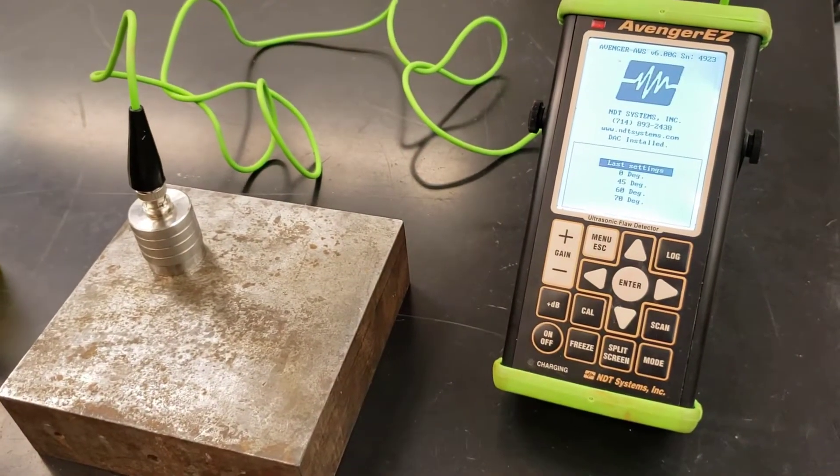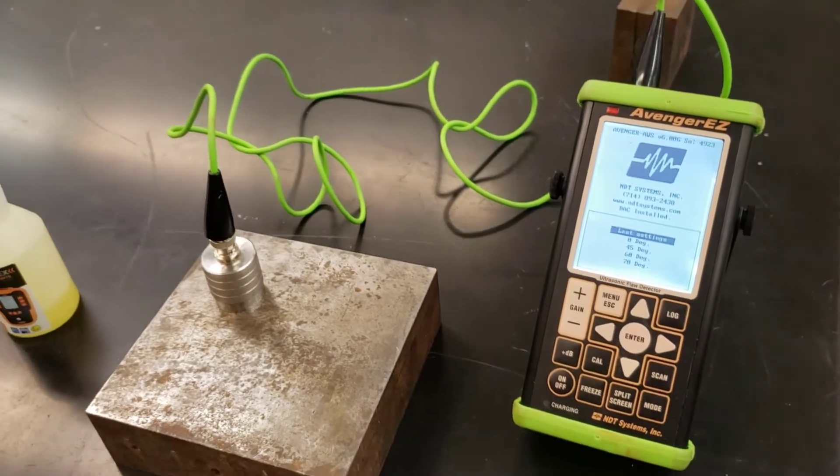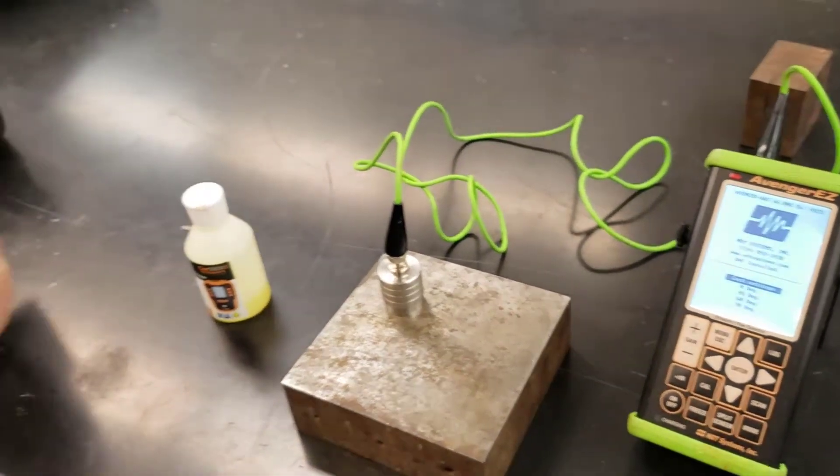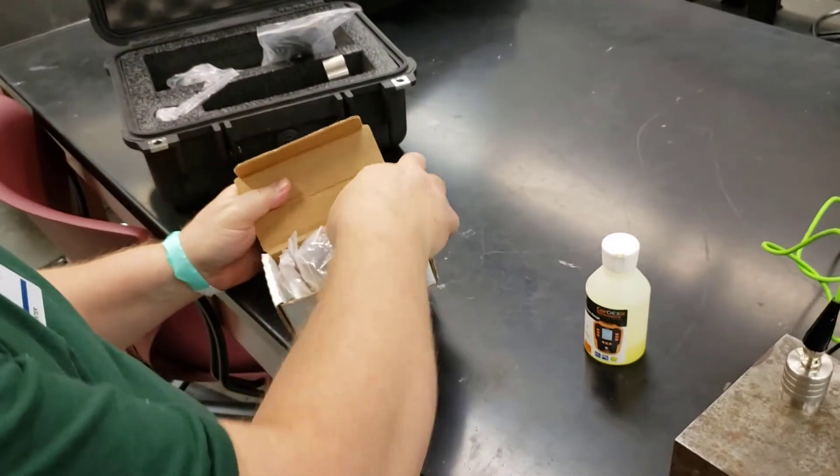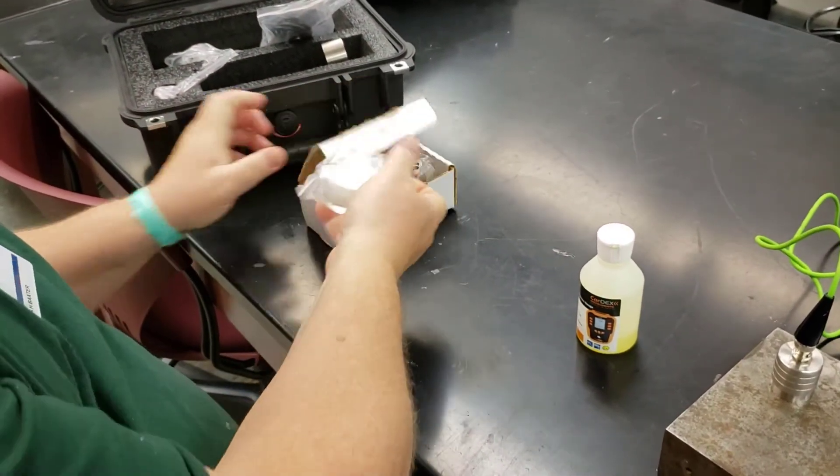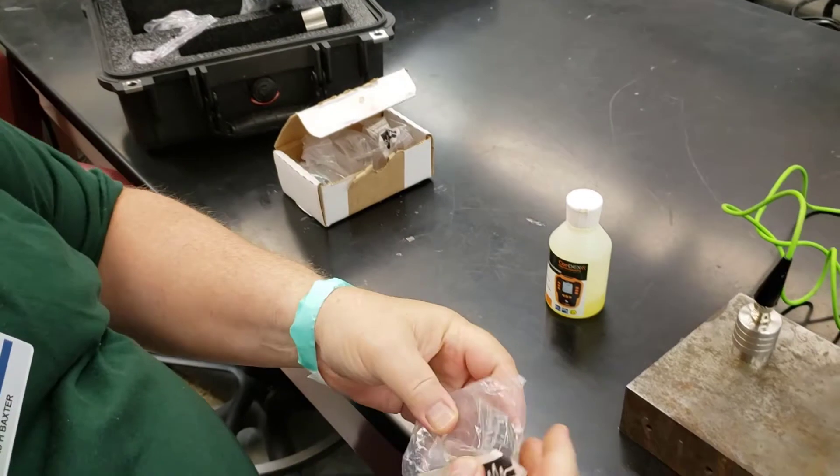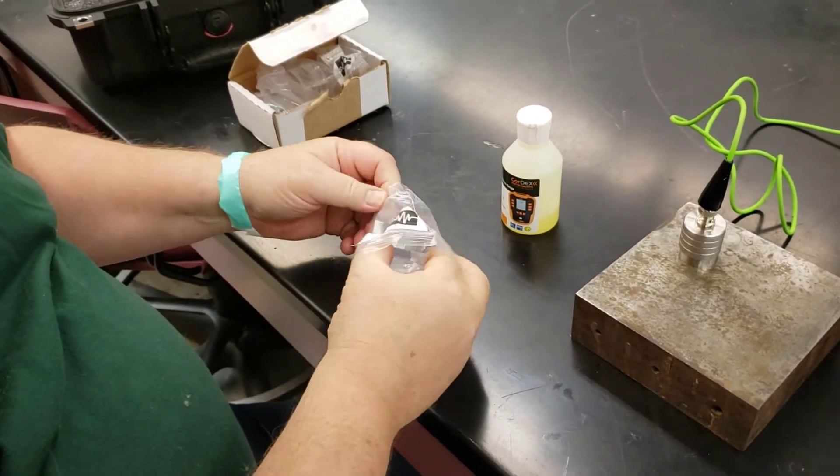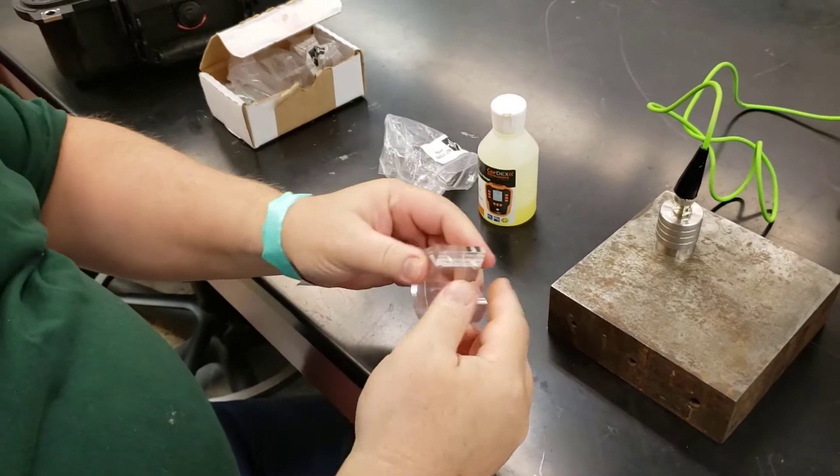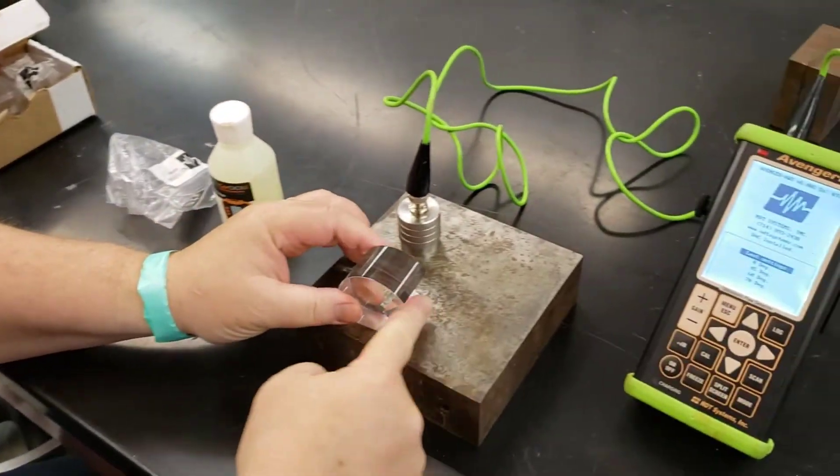We do have transducers that can go at angles. Let me just show you one here very briefly without getting too crazy about it. Here's one for 60 degrees, and you can see this transducer mounts onto here.